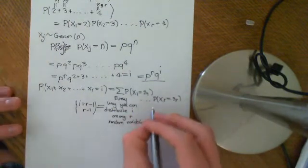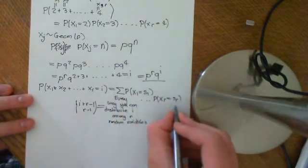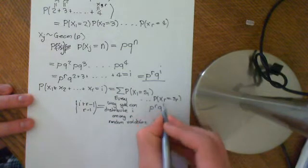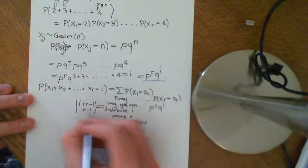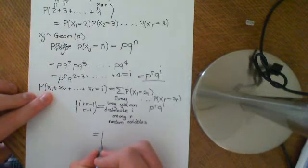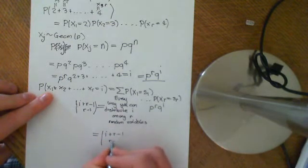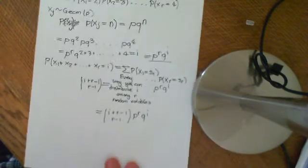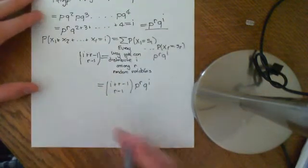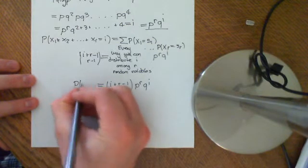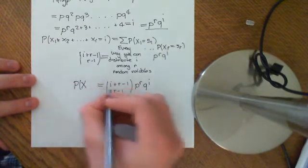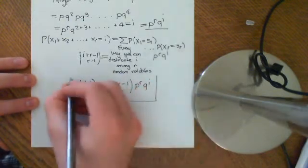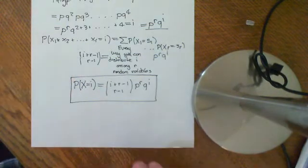And then we've also shown that the probability of this product here is independent of how you distribute it. So it's p to the r, q to the i. So we're going to add up p to the r, q to the i this many times. So overall, this probability is given by i plus r minus 1, choose r minus 1, times p to the r, q to the i. So there you go. That is the PMF of the negative binomial distribution. So this is the probability that big X, which was this original random variable that we said was distributed negatively binomially, is equal to some i. So that is the PMF of the negative binomial distribution.